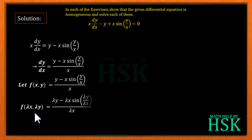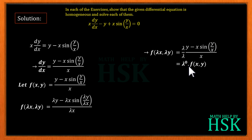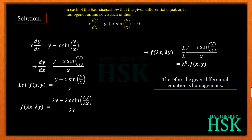We assume the right-hand side is f(x, y) and calculate f(λx, λy). This equals (λy minus λx·sin(λy/λx)) divided by λx. Taking λx common from the numerator, the λ terms cancel, giving λ⁰ times f(x, y). This shows f is a homogeneous function of degree 0.